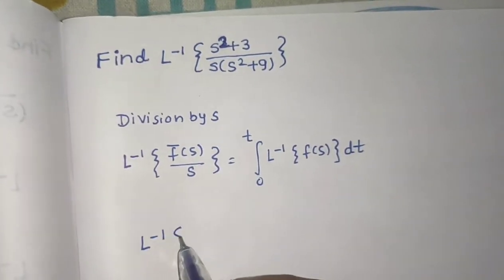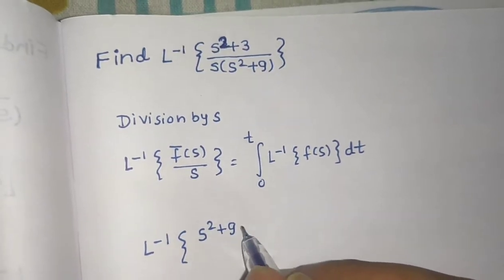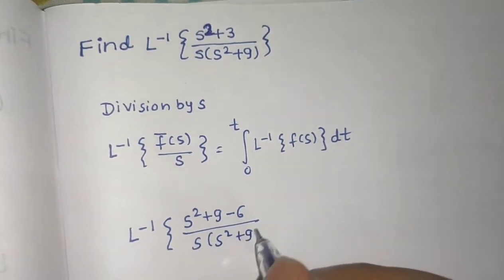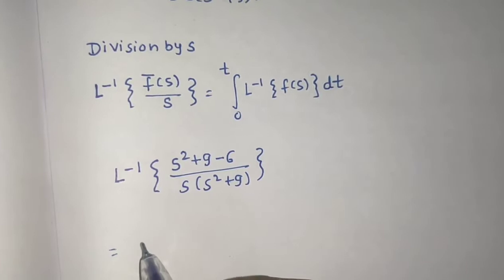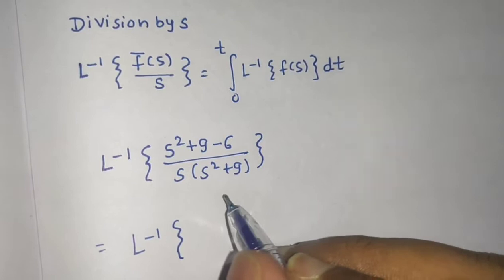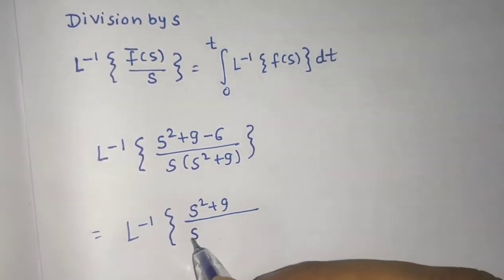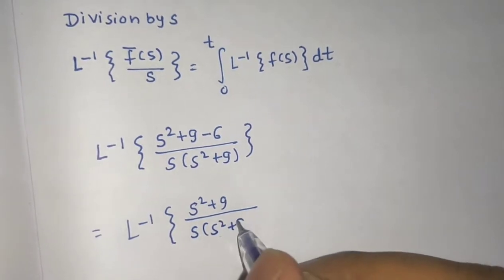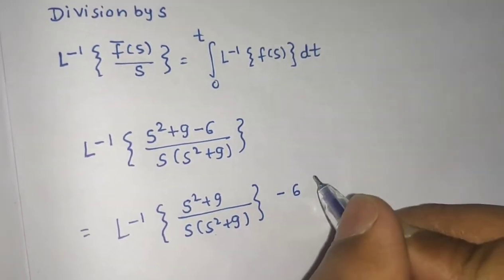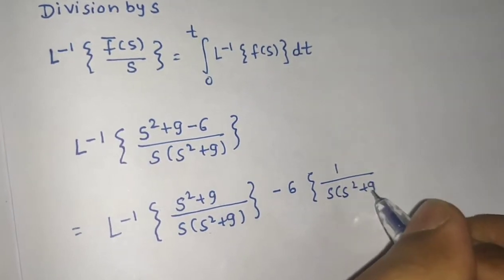Using this concept, we'll first make some rearrangements. We write the numerator as (s² + 9) minus 6, divided by s times (s² + 9). We can distribute this as (s² + 9) divided by s(s² + 9), minus 6 times 1 upon s(s² + 9).